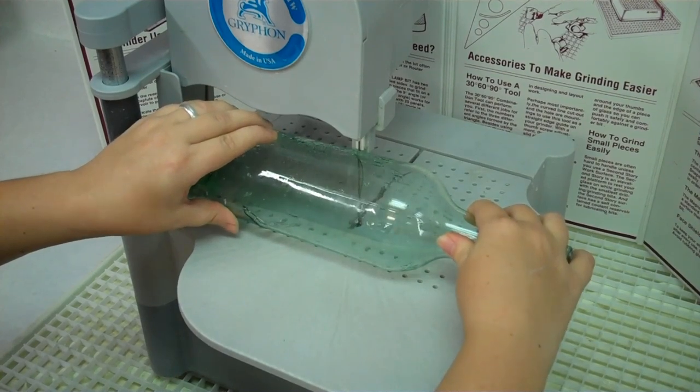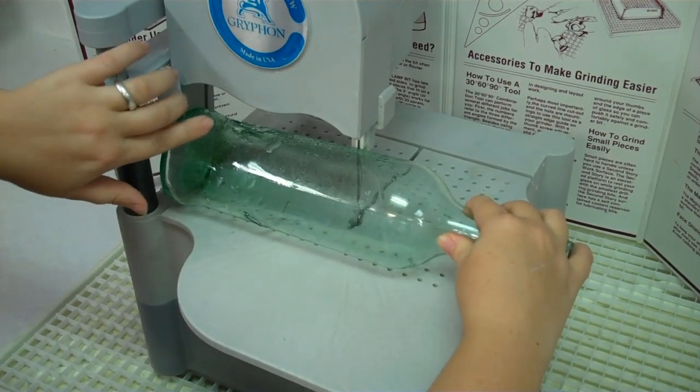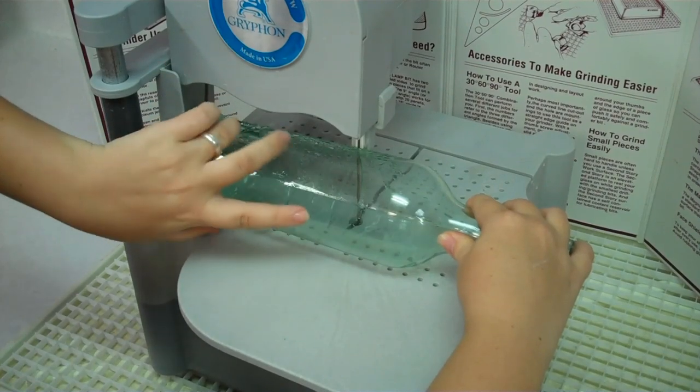This one will not be able to go all the way through. You want to make sure you have the bottom of the bottle all the way against the saw for support.